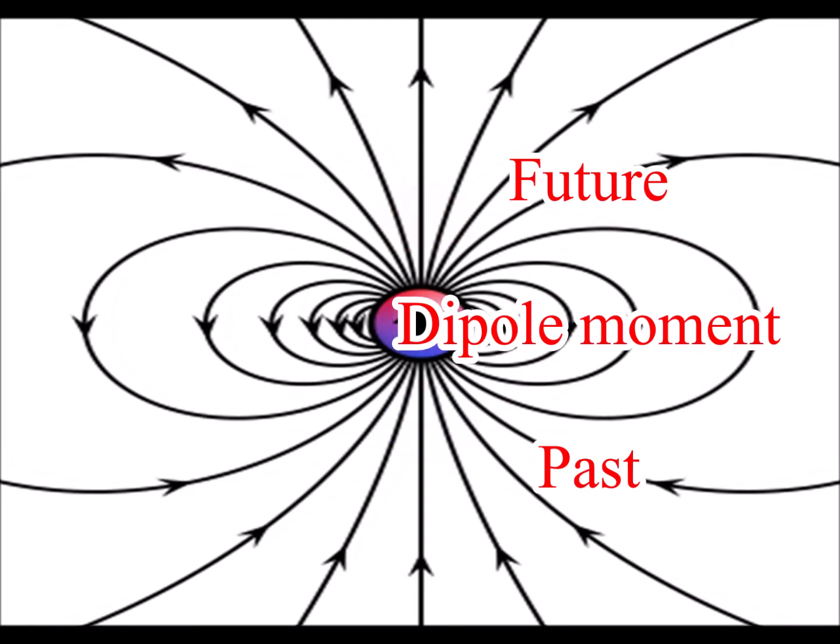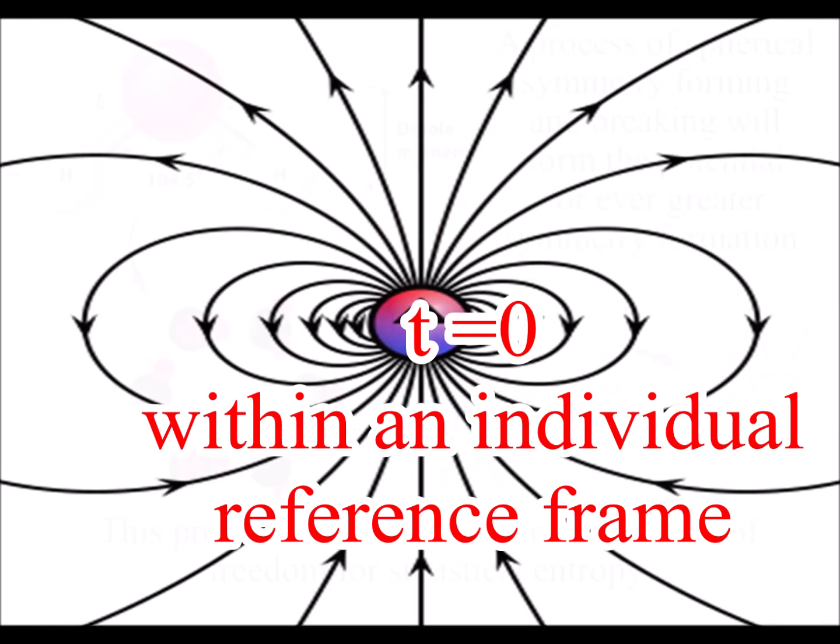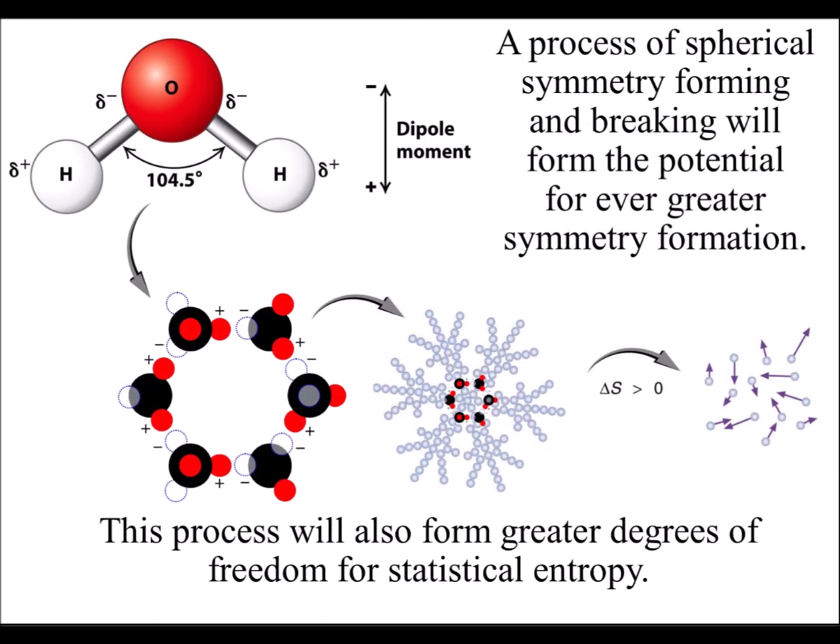In this theory, positive and negative charge forms a manifold or boundary condition for what has been called the fourth dimension of time. Whenever our world changes, there is the movement of charge.